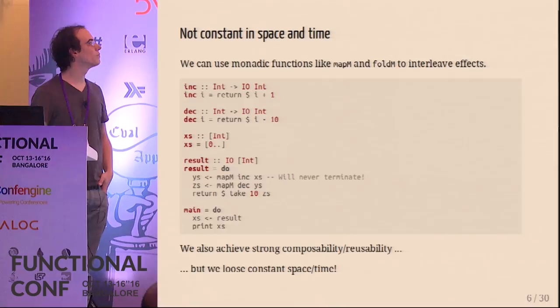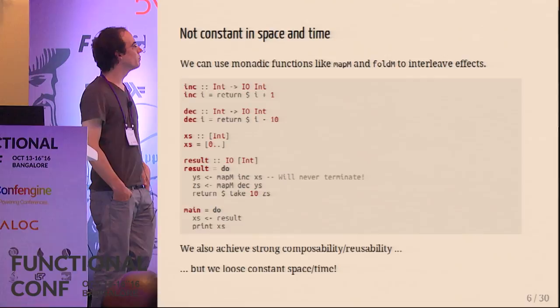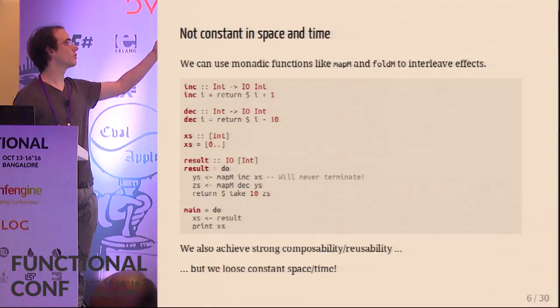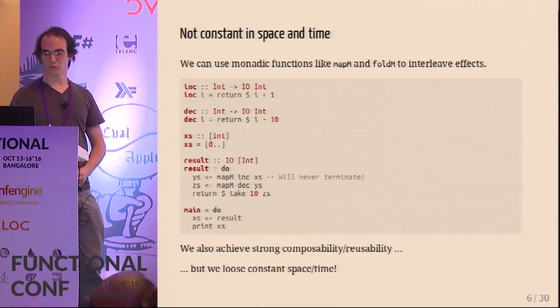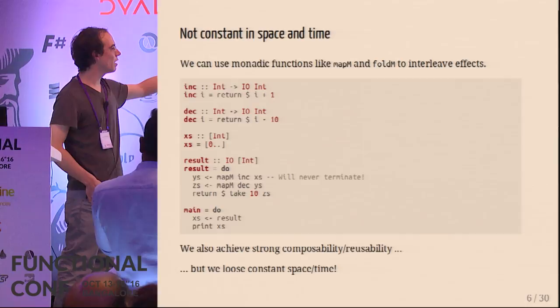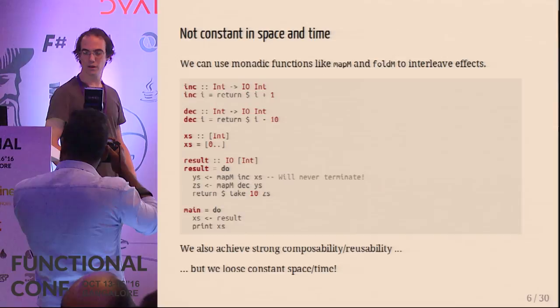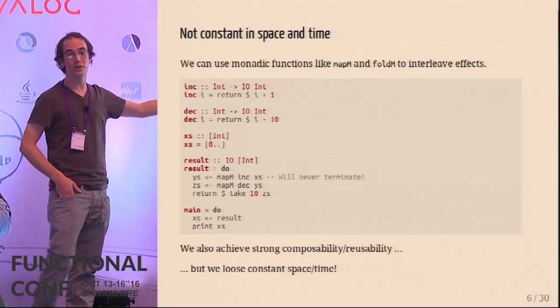In the Haskell core library there are functions to work with IO that help you interleave effects - one is `mapM`, another is `foldM`. Taking the same example, but this time our increment and decrement functions work in the IO monad because they perform a side effect. I use `mapM` twice, then call `take 10`. I keep nice composability - I can chain my two steps together. Sadly, the program won't terminate. It gets stuck at `mapM` on the infinite list `xs`, because it will try to force the entire infinite list and never terminate.